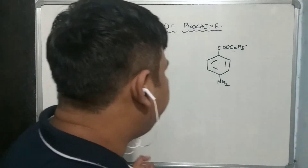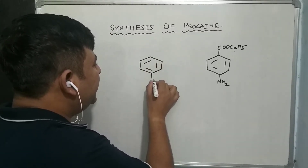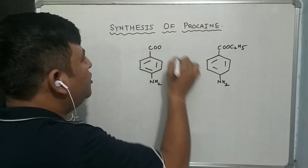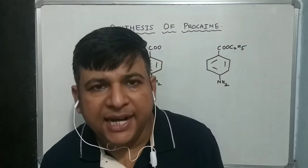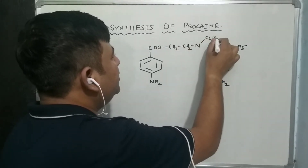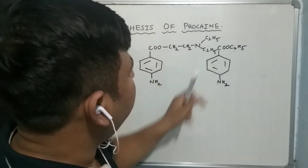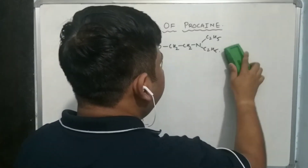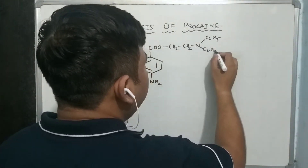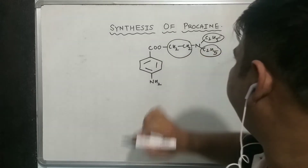Now see how procaine is made. You know the benzocaine structure — this is your benzocaine, with NH2 and COO. What you have to do is add a diethylaminoethyl moiety: CH2-CH2-N with C2H5 and C2H5. If you add this moiety, you get procaine. So simply add CH2-CH2-N(C2H5)2 to the benzocaine structure.